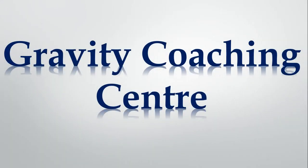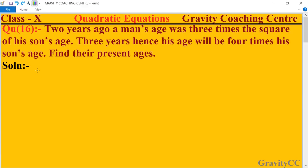Welcome to our Channel Gravity Coaching Center. Chapter 10, Quadratic Equations, Question Number 16. Two years ago a man's age was three times the square of his son's age. Three years hence his age will be four times his son's age. Find their present ages.